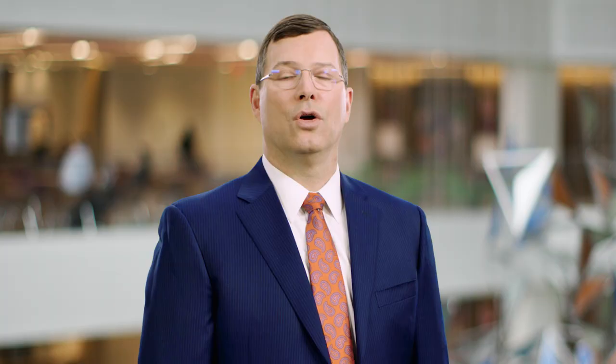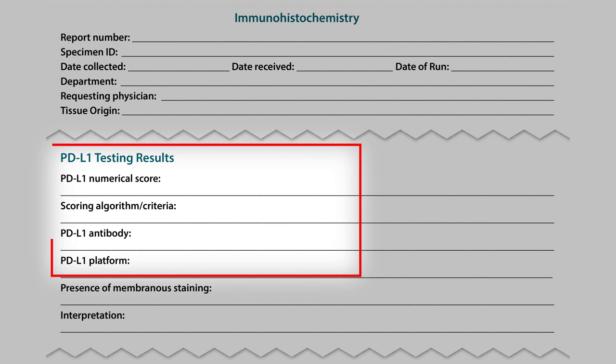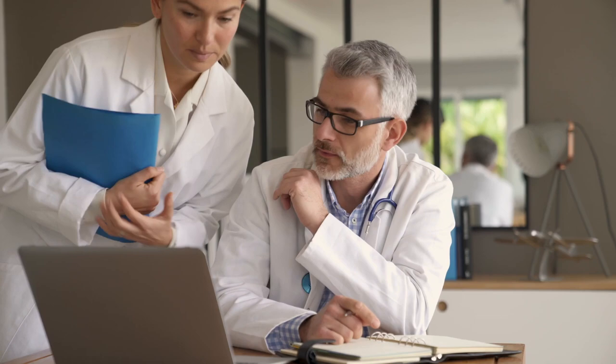Once you've determined the PD-L1 expression level, it is also important that you communicate this information clearly. Reporting procedures may vary by location, but it is typically recommended to include the antibody clone or kit used, and the numeric score itself. Be sure to discuss PD-L1 reporting protocols with other members of your multidisciplinary team. As with many aspects of the patient tissue journey, frequent and open communication is critical to the success of biomarker testing.